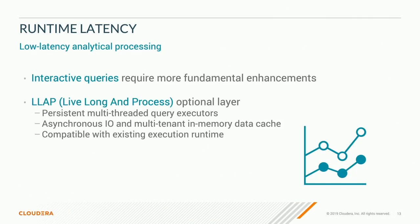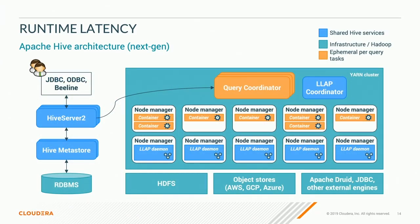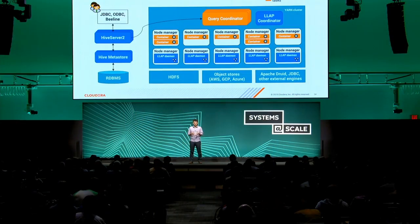That's why we introduced LLAP — an optional layer that comes with Hive providing persistent multi-threaded query executors running in parallel in your cluster. Optionally it also provides asynchronous IO and a multi-tenant in-memory data cache. Very importantly, it is compatible with the existing execution runtime, so we didn't have to reimplement the whole system internals. In the updated architecture, a subset or all nodes in your cluster have these long-running LLAP daemons, coordinated by an LLAP coordinator that monitors daemon health and restarts them if necessary. Query coordinators submit work directly to the daemons instead of through containers.